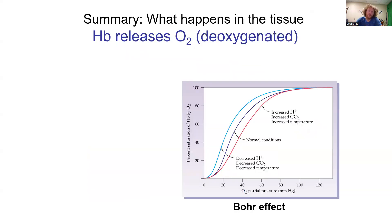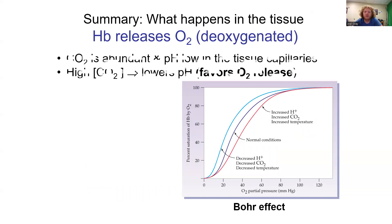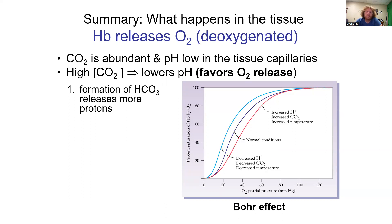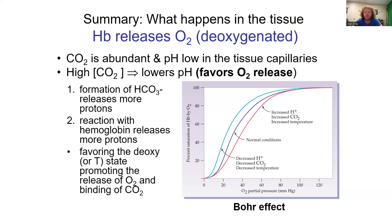Another way to look at the Bohr effect is this oxygen binding curve with its sigmoidal shape. The middle line represents normal conditions. We shift right when hydrogen ion concentration increases (pH decreases), CO2 concentration increases, or temperature increases. We shift left when pH increases, CO2 decreases, or temperature is lower. Formation of HCO3- releases protons, favoring the deoxy T-state and promoting O2 release and CO2 binding.